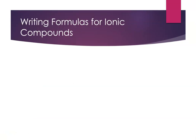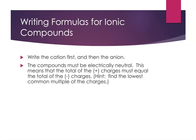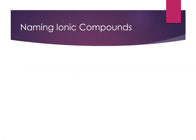Now that we know our monatomic cations and anions, let's think about how to put them together to write neutral compounds. Write the cation with its charge and then next to it write the anion with its charge. Then pick subscripts so that the sum of the positive charges equals the sum of the negative charges — the overall charge must be zero. One way to do this is to look at the lowest common multiple of the charges. The charges themselves do not show up in the formula, only the subscripts. For naming, you list the cation name and then the anion name — always in that order.